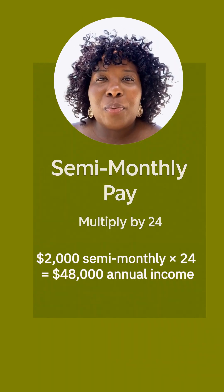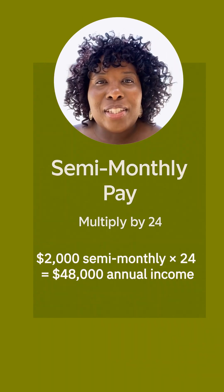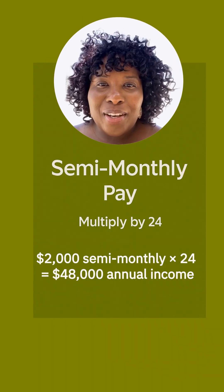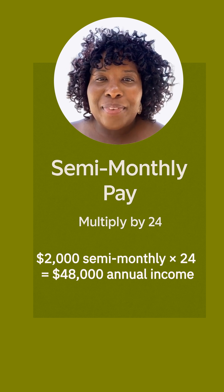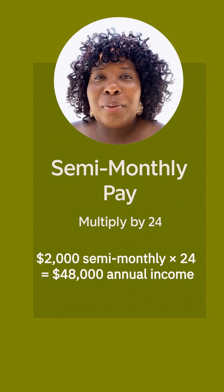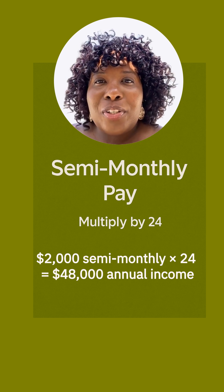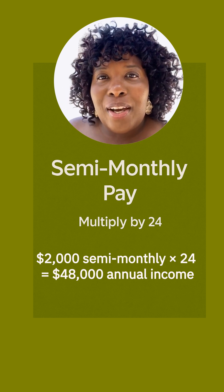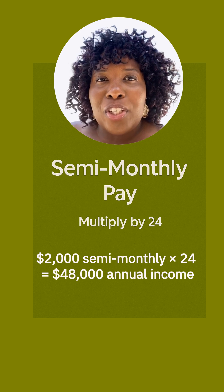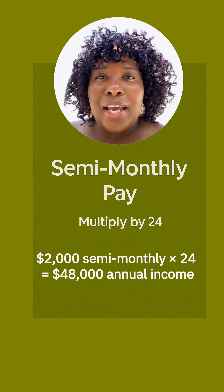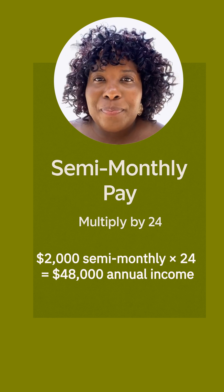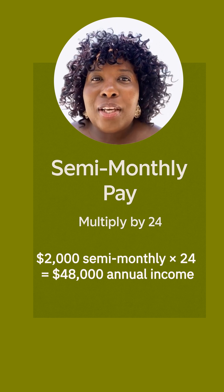If someone is paid semi-monthly, just take their pay amount and multiply by 24. Example: $2,000 semi-monthly times 24 equals $48,000 annual income. This formula is simple, but it's exactly what shows up on the test.